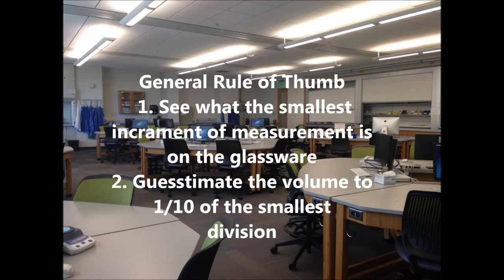The general rule of thumb for reading significant figures on glassware is to figure out the smallest increment that the glassware displays and then read the volume with an additional one-tenth of the increment accuracy that was given.